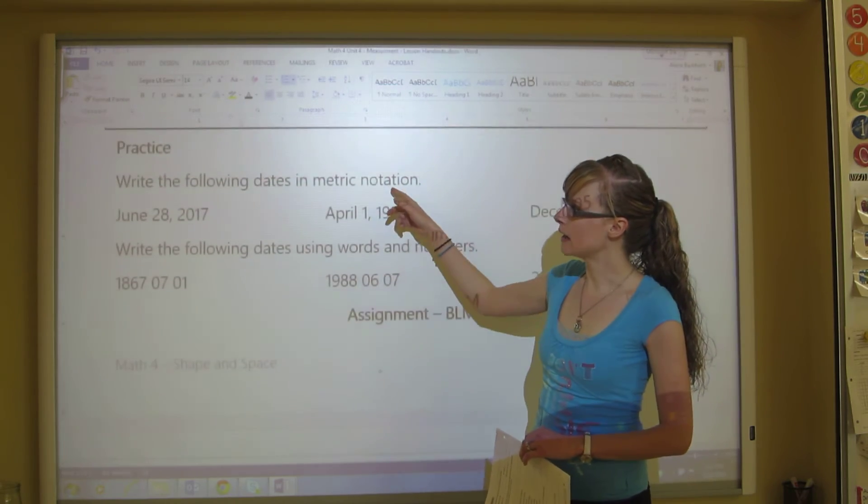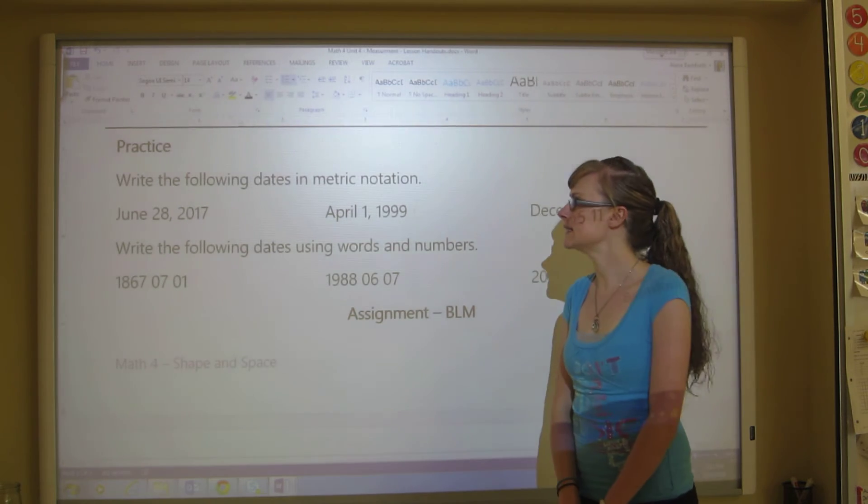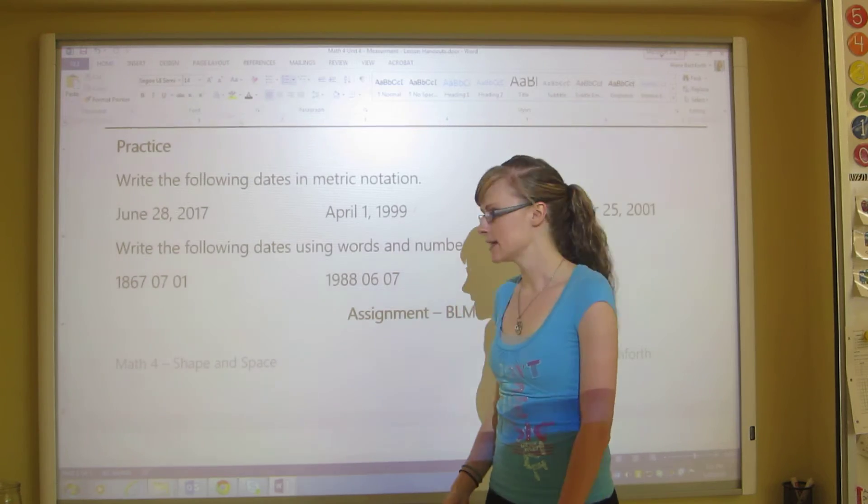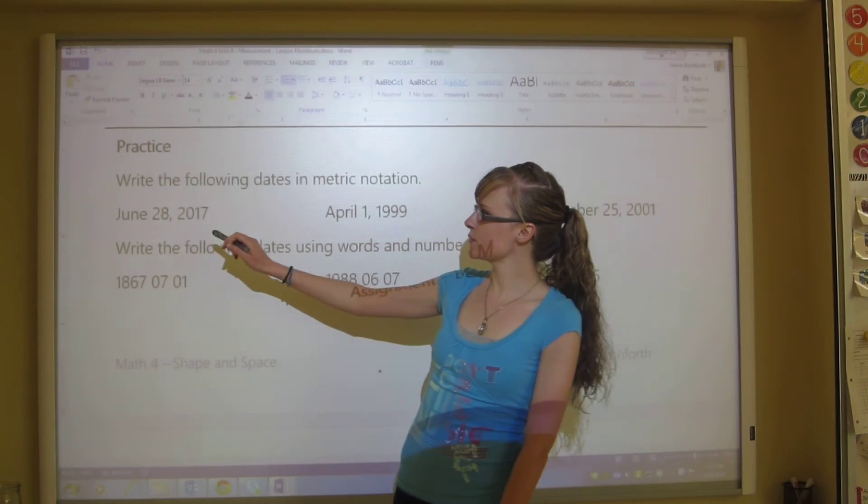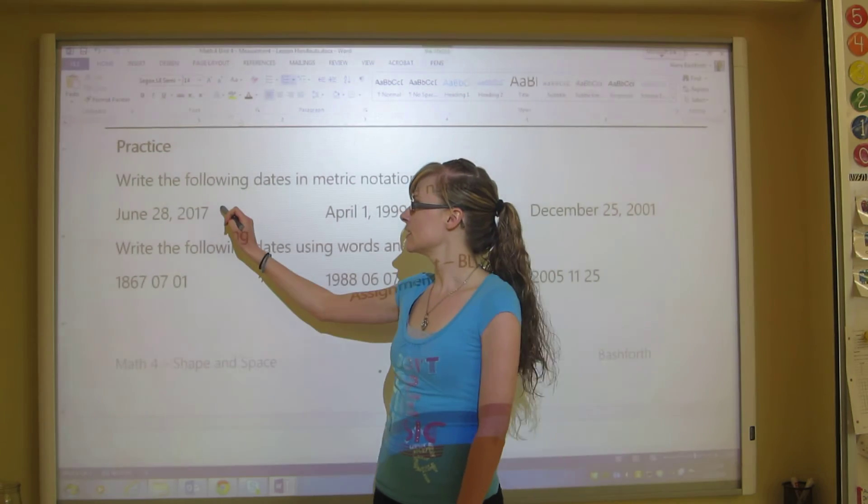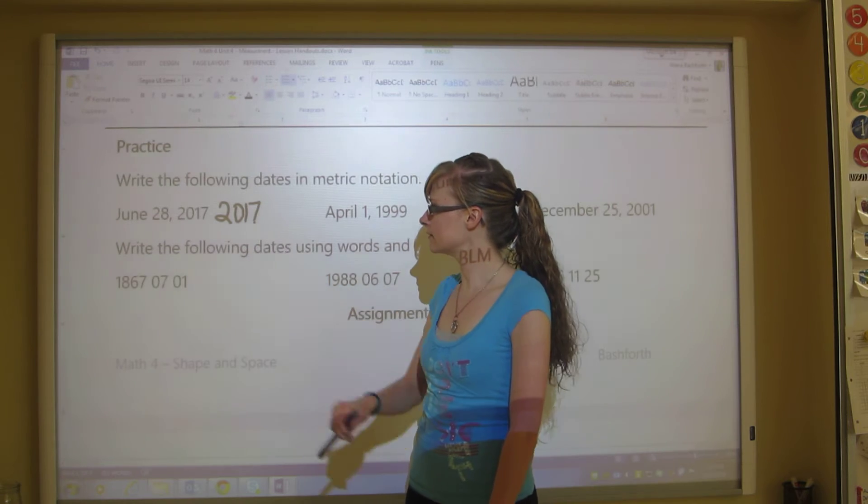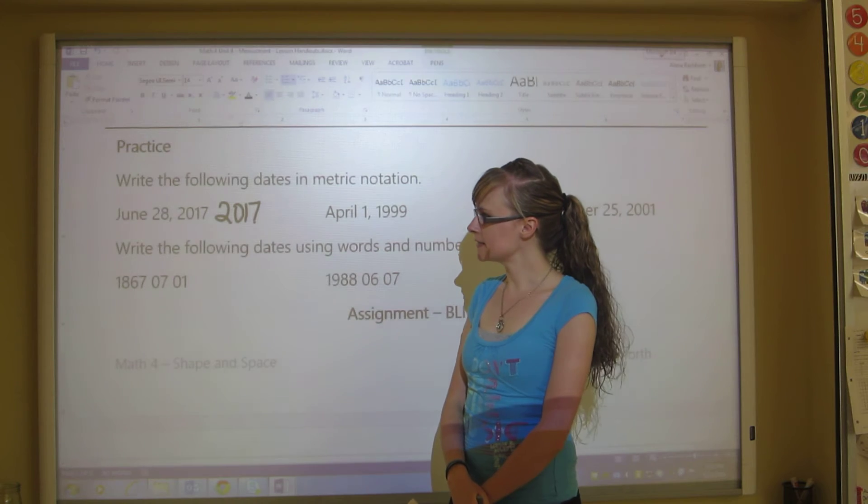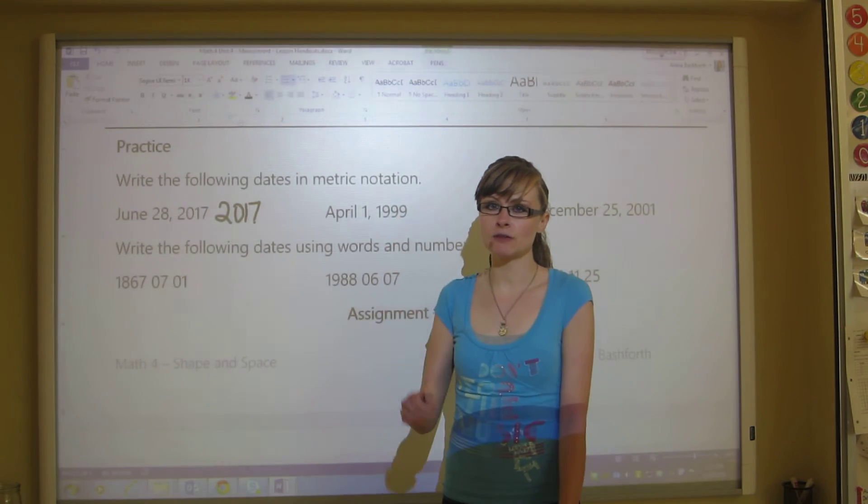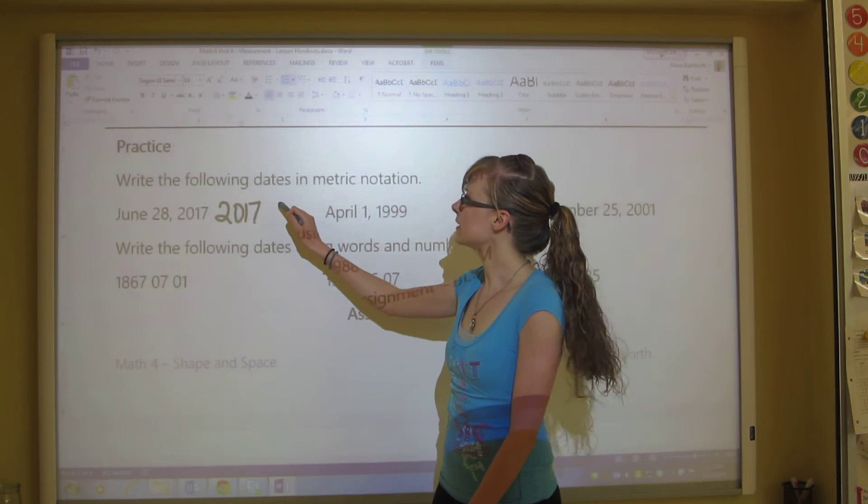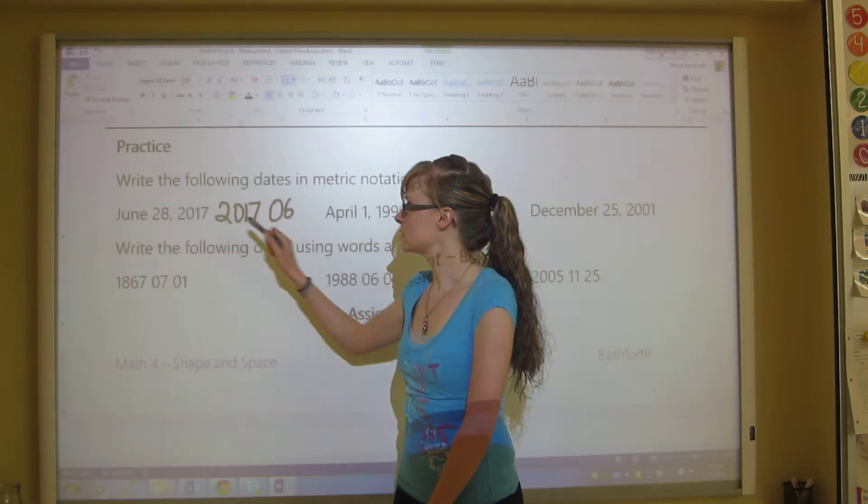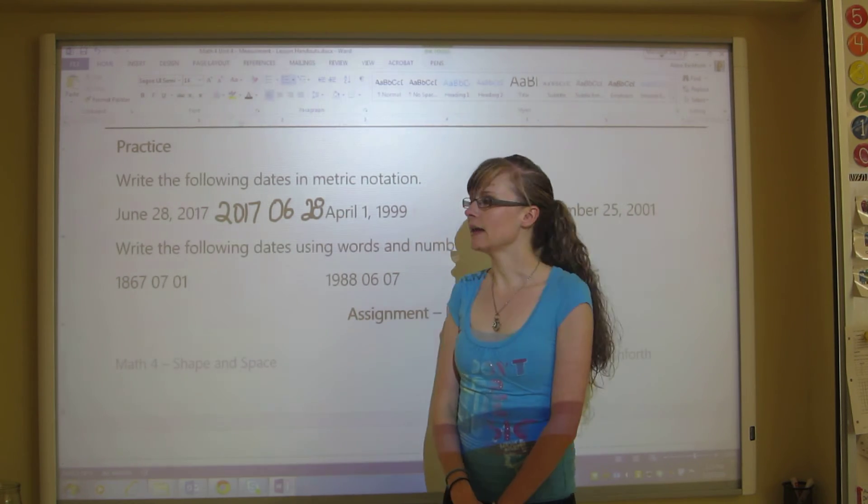So let's do some practice ones. It says write the following dates in metric notation. So we're going to use the date as the four digits instead of the two digits, unless we're told otherwise. We've got June 28th, 2017. And so we need to write the year first. So we would write 2017 and then we go to the next longest amount of time, which is the month. And we've got June. June is the sixth month, January, February, March, April, May, June, six months. So zero six, and then we put the date, which is 28th.